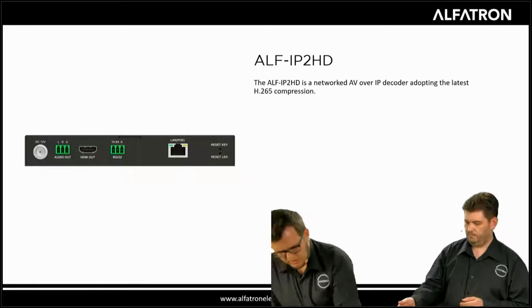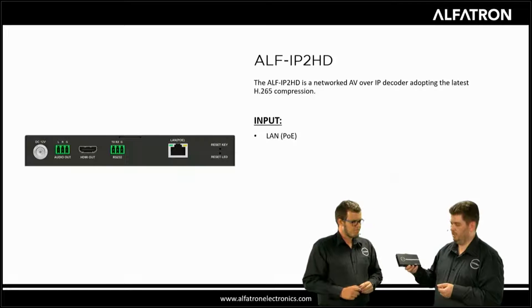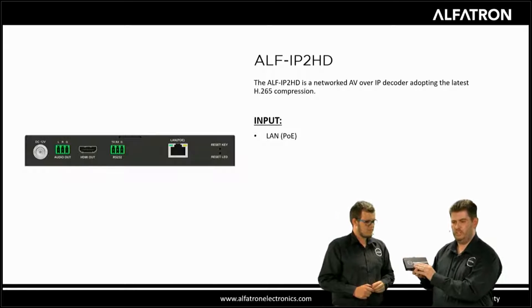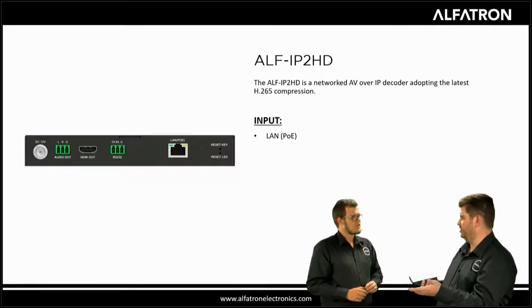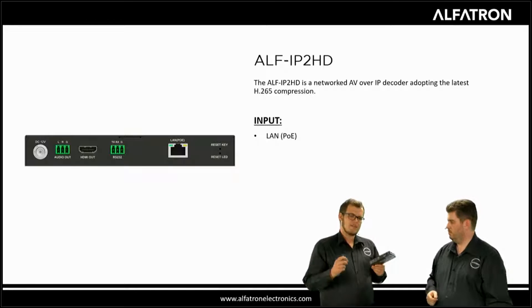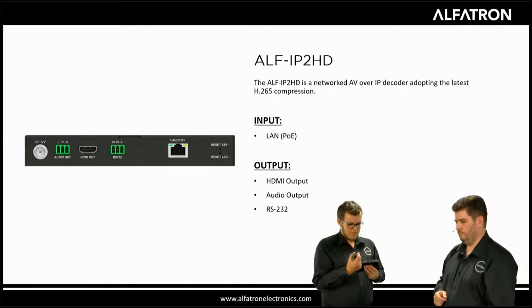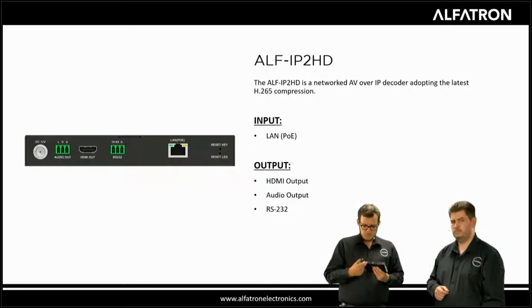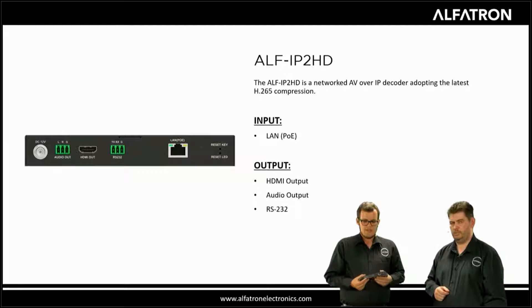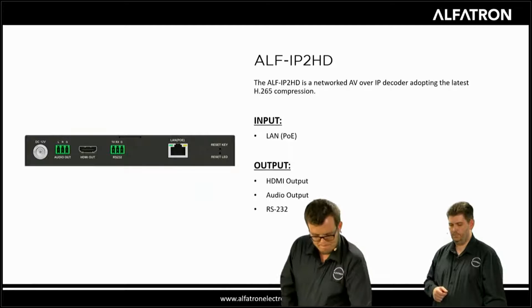The decoder is the IP to HD, and they're physically very similar in dimensions. The HD version is the decoder and the HE version is the encoder — that's essentially the difference. Now we have the LAN port as the input and everything else moves to output: HDMI output, RS232 output, and a far-side audio output right at the monitor, depending on your requirement. Both are PoE or power supply powered.